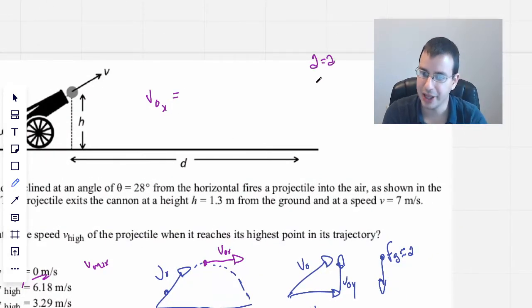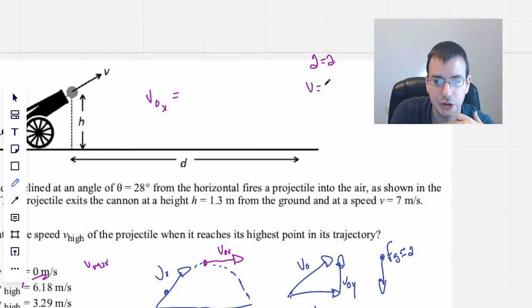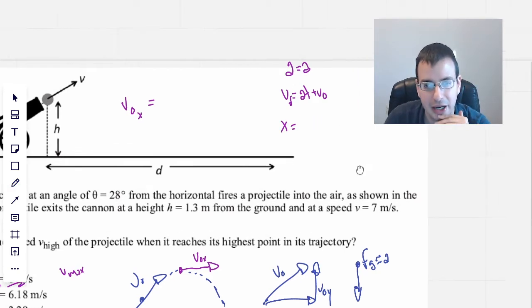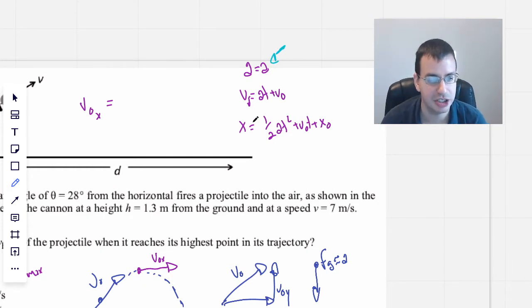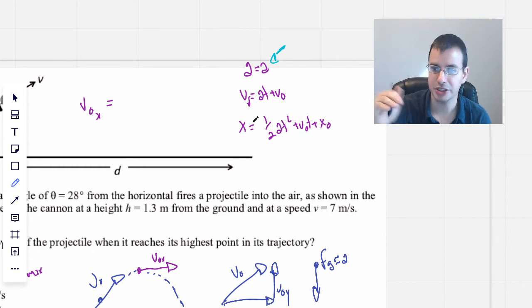This is a kinematic problem. I'm going to write up the kinematic equations real quick. So I start with a equals a, which is basically saying that a is a constant. Take the integral with respect to time, we get v equals at plus V naught, and x equals one half at squared plus V naught t plus x naught.